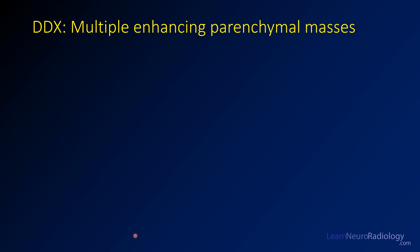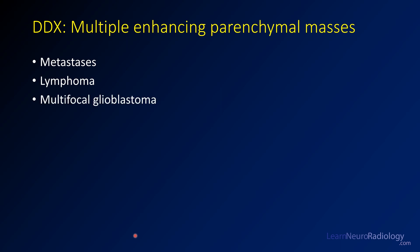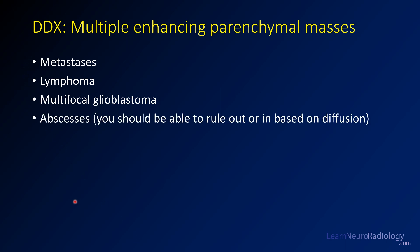Another common scenario is multiple enhancing parenchymal masses — similar to before but more than one. Your differential is similar but the order changes a little bit. When you have multiple masses you have to favor metastases. Lymphoma can also involve multiple areas throughout the brain. Glioblastomas can be multifocal but it's going to be less likely. Abscess and infection are always considerations, but if you can tell someone it's likely metastases, that can really help them narrow their diagnosis and continue their workup more effectively.